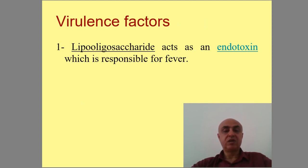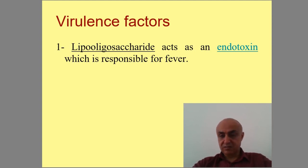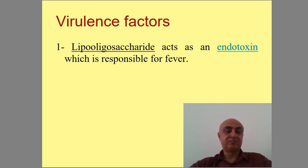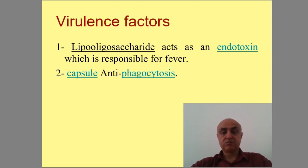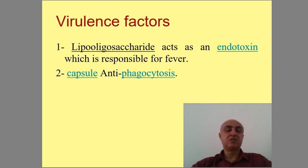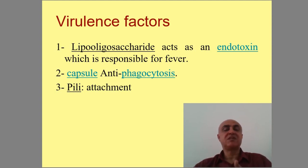When blood agar is used, the colony characteristics are important. This is called lipooligosaccharide — it is an important virulence factor. The bacteria also has a capsule which gives high virulence results. The cell wall structure of Neisseria is significant.